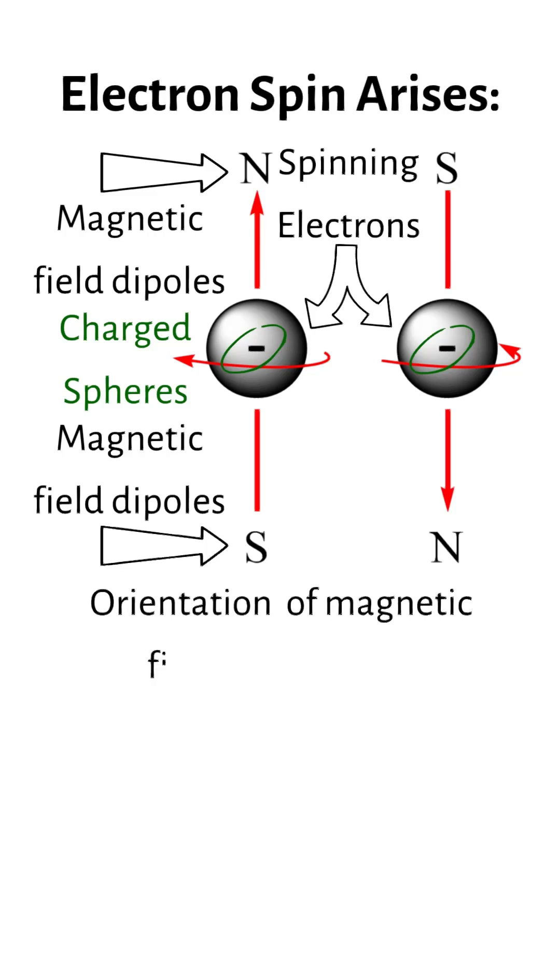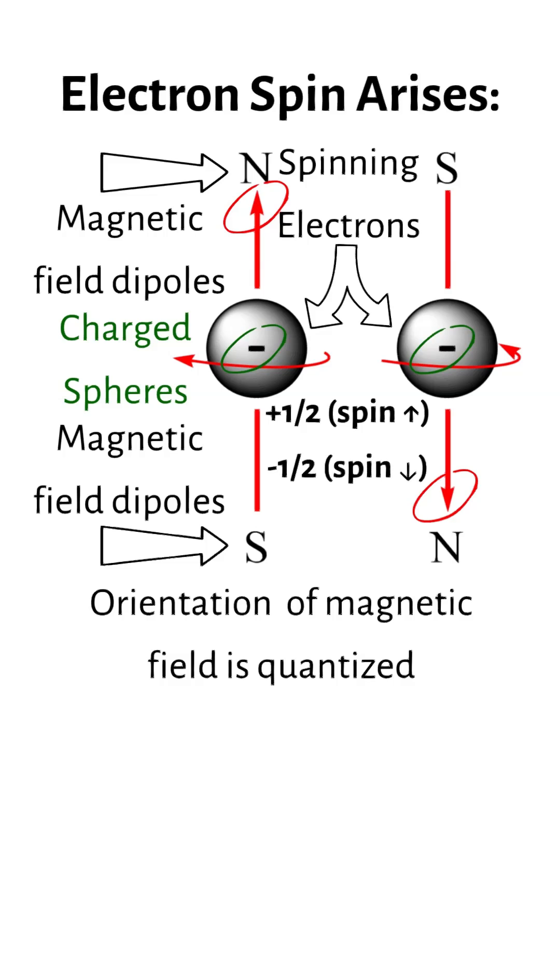The orientation of this magnetic field is quantized, existing in two opposite directions, represented by spin values of plus one-half spin up and minus one-half spin down. These orientations correspond to the two possible values of M sub s, fundamentally influencing how electrons are arranged among an atom's orbitals.